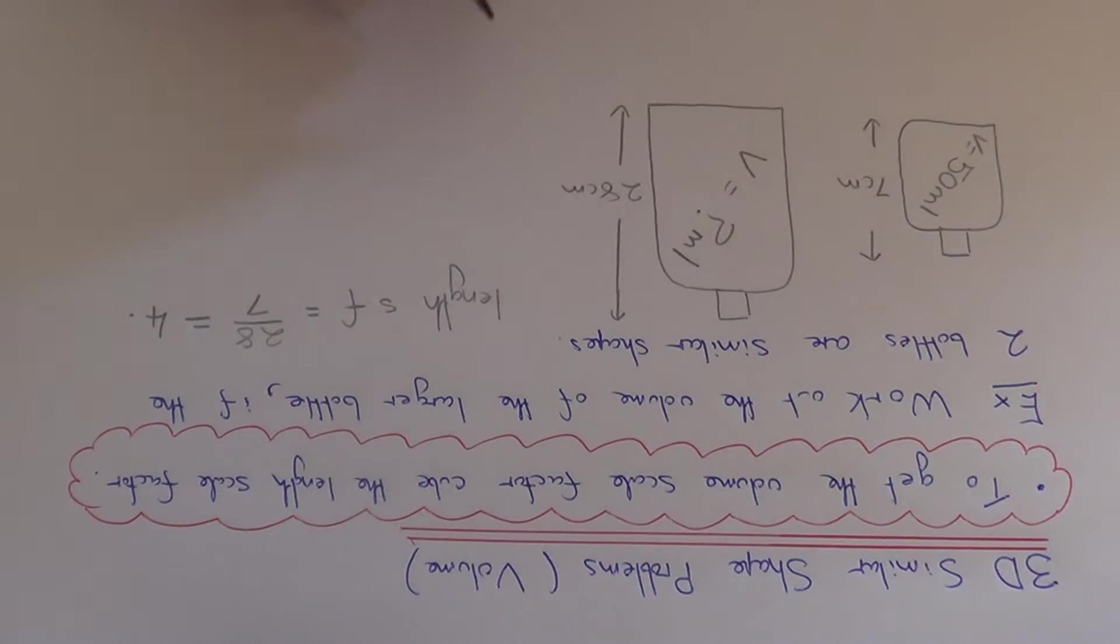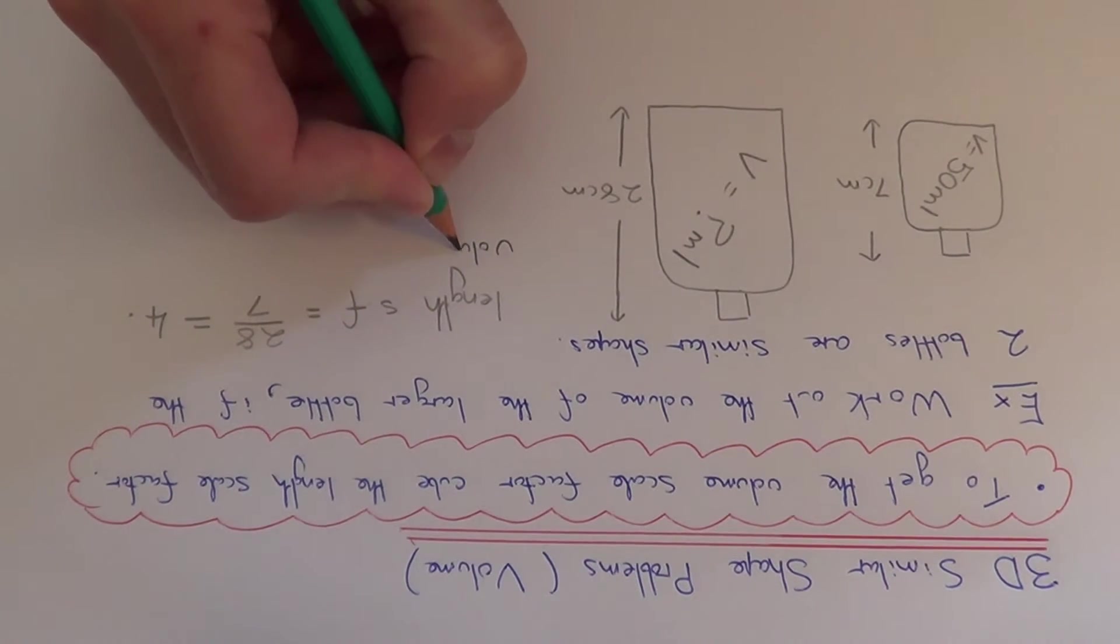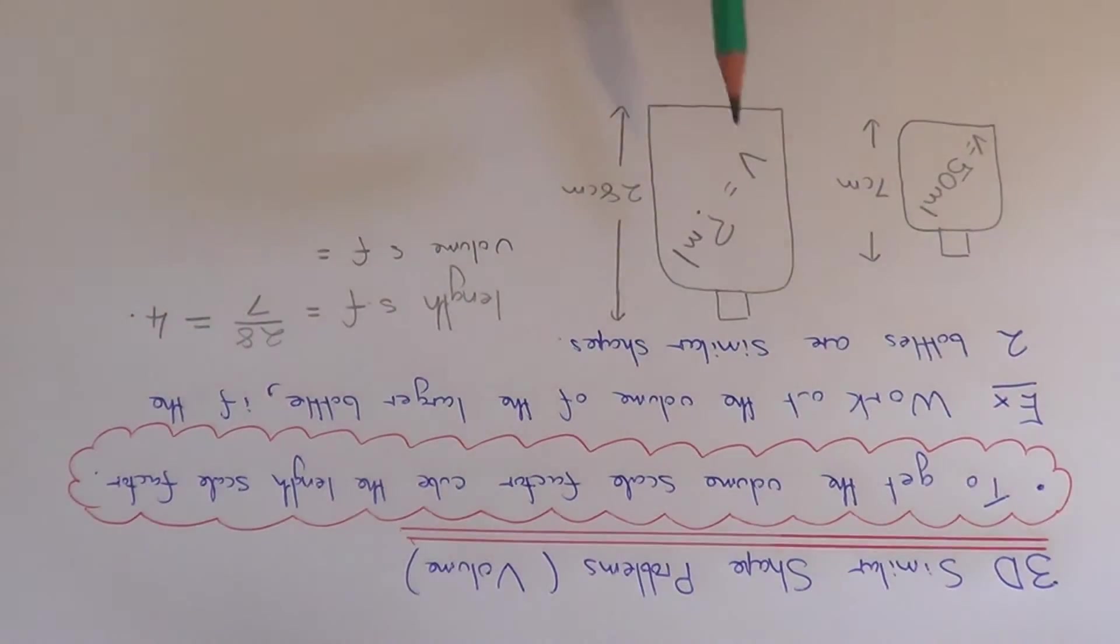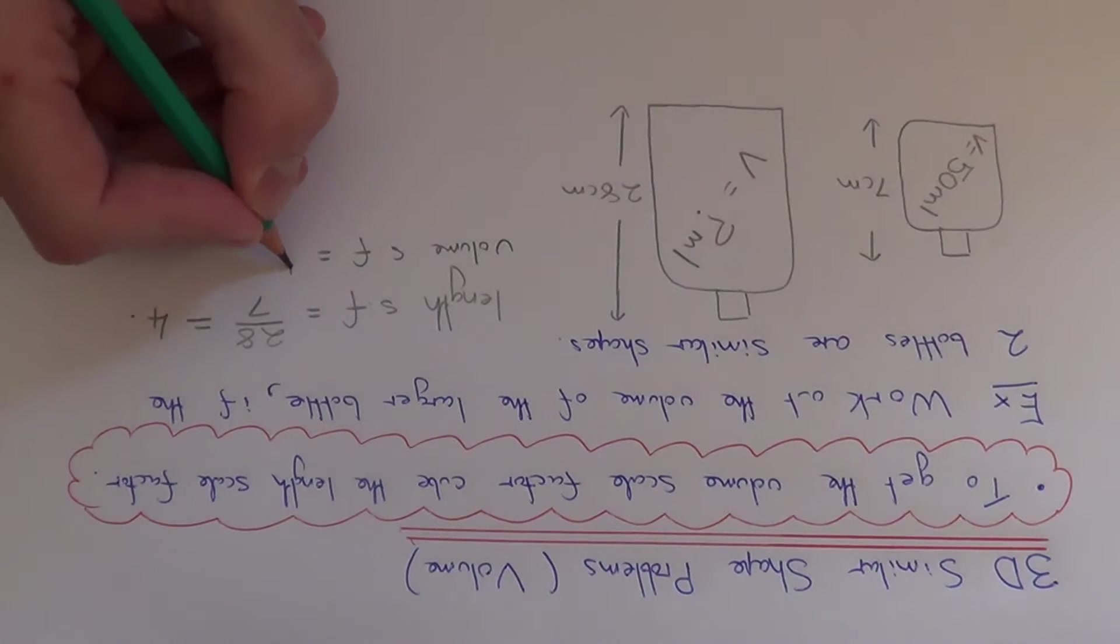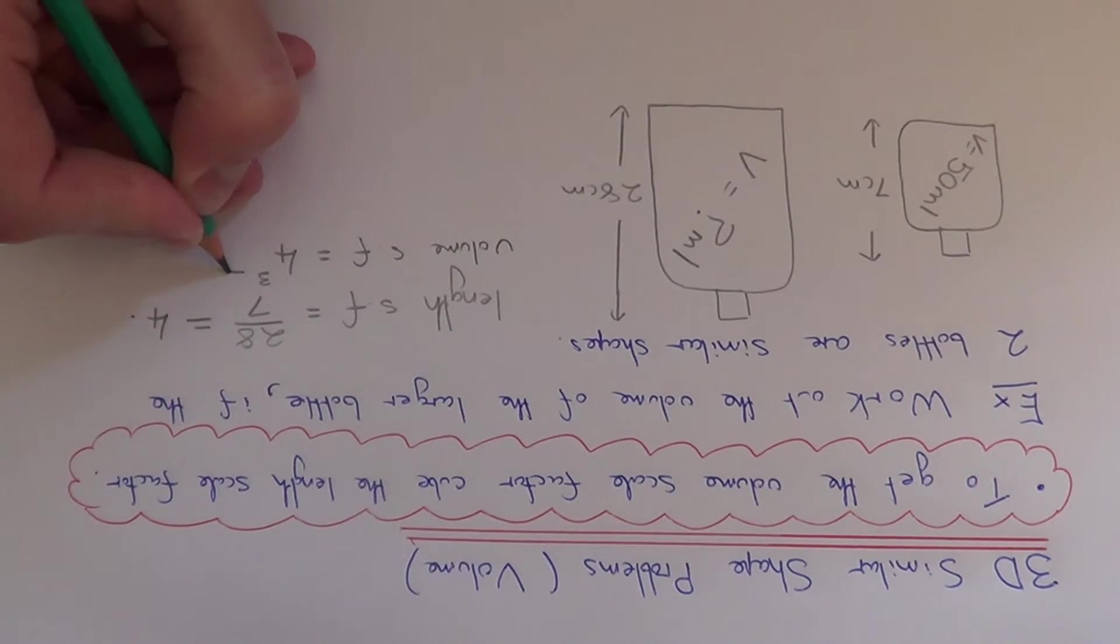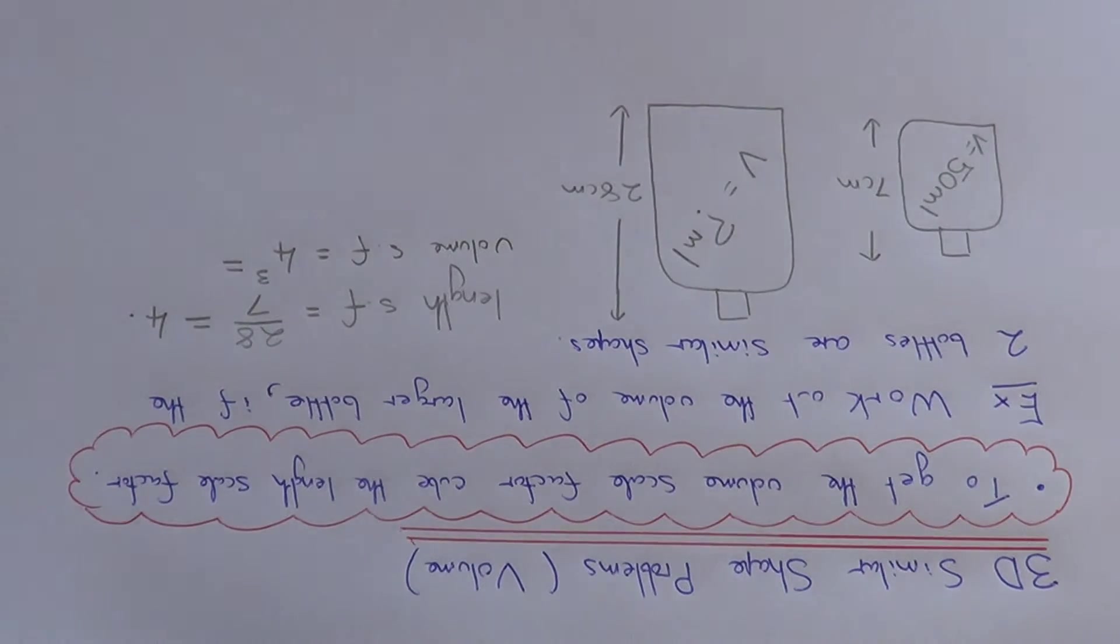So to work out the volume we need to work out the volume scale factor next. To get the volume scale factor you have to cube the length scale factor. So we need to work out 4 cubed. So 4 cubed is 64.